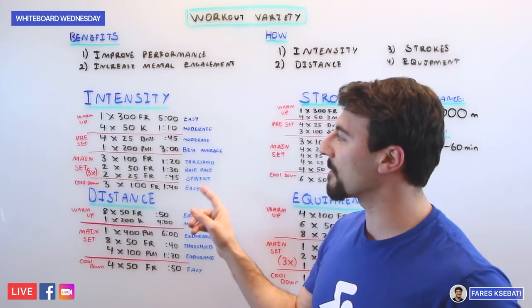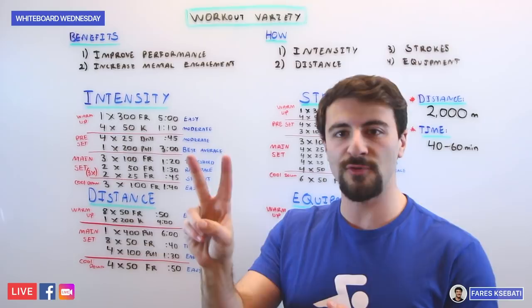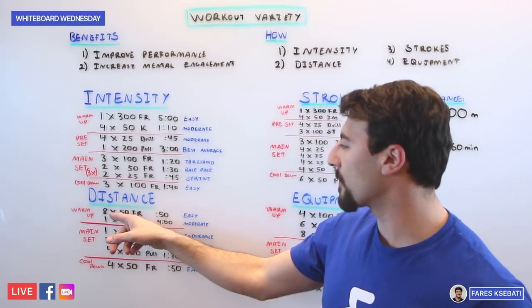Now the next workout we're going to look at is varying your distance, so we're going to change up the distance but the whole workout is going to remain 2,000 meters. So if we look at this workout that varies by distance, we're going to start with 8x50s freestyle easy energy zone, followed by 200 kick moderate. So already in the warm-up we're alternating between 50 swim and a 200 kick.